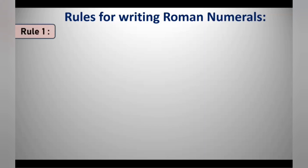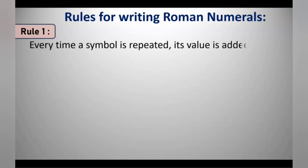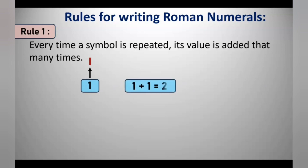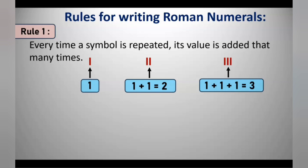Rule number 1: Every time a symbol is repeated, its value is added that many times. For example, I is used to write 1. To write 2, which is 1 plus 1, II is used. Similarly, to write 3, which is 1 plus 1 plus 1, you write I three times as III.